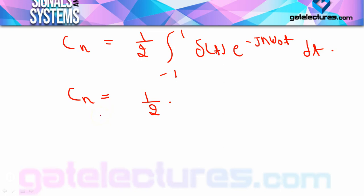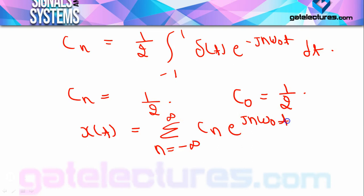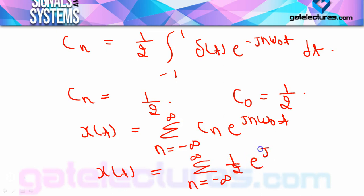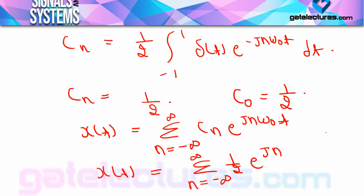Since cn = 1/2 and does not depend on n, c₀ is also 1/2. The Fourier series representation is: x(t) = Σ (n = −∞ to +∞) cn · e^(jnω₀t). Since ω₀ = 2π/T = 2π/2 = π, the Fourier series becomes: x(t) = Σ (1/2)·e^(jnπt).